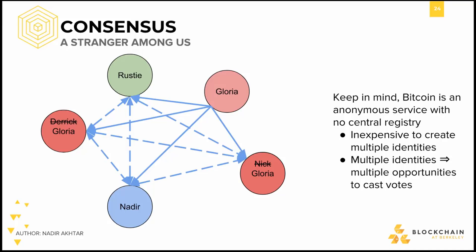Gloria, a real-world minority, could easily propose and vote for her own malicious transactions by creating sufficient identities and occupying a network majority. In other words, this current version of consensus is susceptible to a Sybil attack, where a user creates multiple identities for some malicious purpose. With such little cost to vote, votes become meaningless. There's no value in a vote because anyone with spare time can make as many identities as they want.